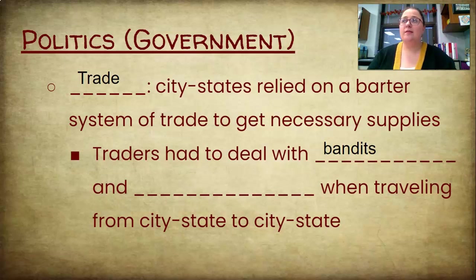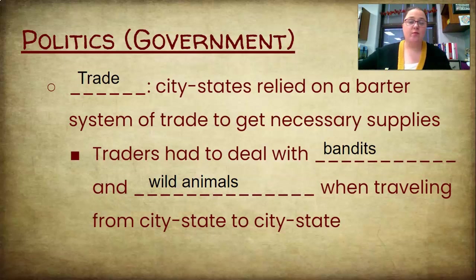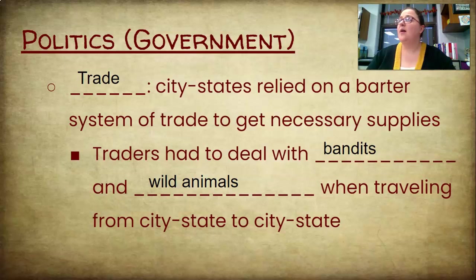There were groups of people whose professional job was to be a bandit — staying on trade routes, robbing traders, and selling or keeping what they gathered. Another threat was wild animals: traveling in the wilderness with no established paved roads, you're out with a donkey that is food for predators. You'd deal with wild beasts whether in the water — like crocodiles — or traveling overland with coyotes, wolves, and different birds. Wild animals and bandits were a big problem.